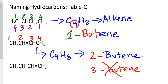Looking at the same compound and counting from right to left, the name still remains 2-butene because the double bond is still between the second and third carbon. So it should be 2-butene regardless of which direction you count.